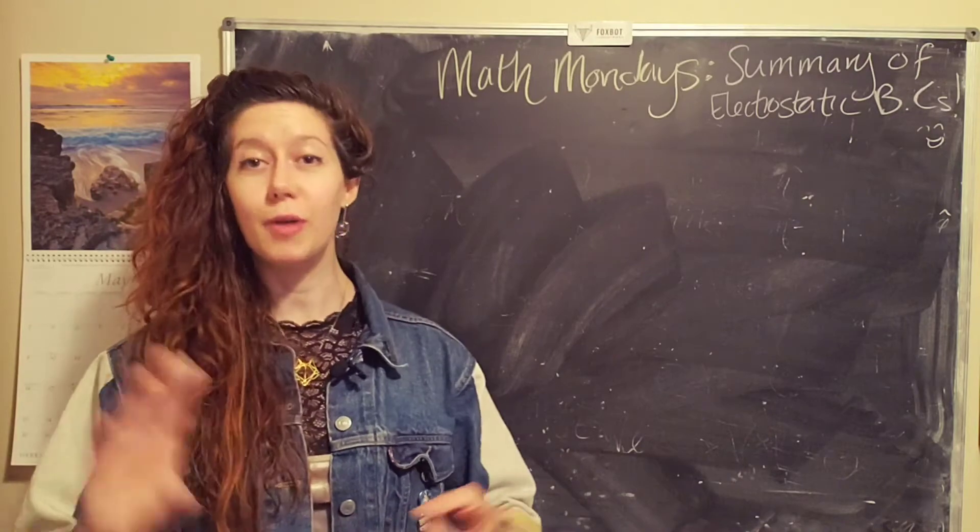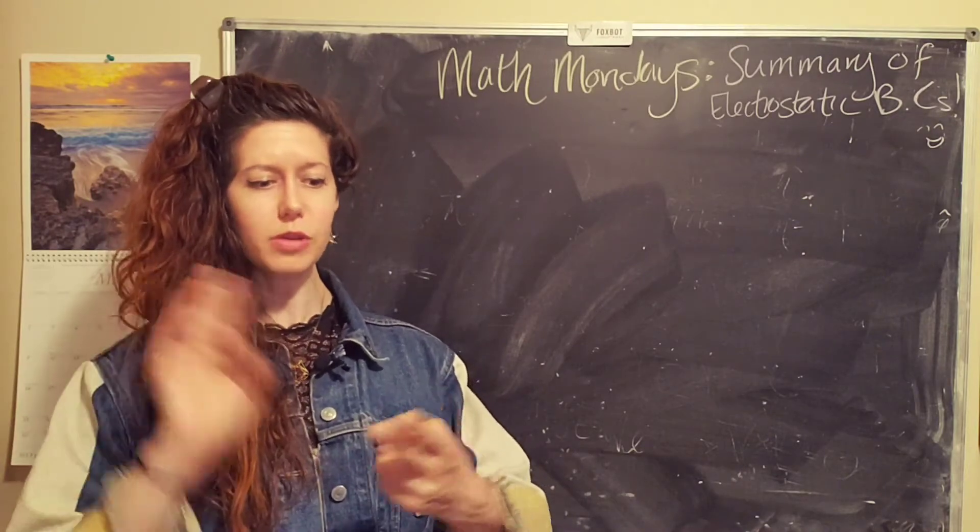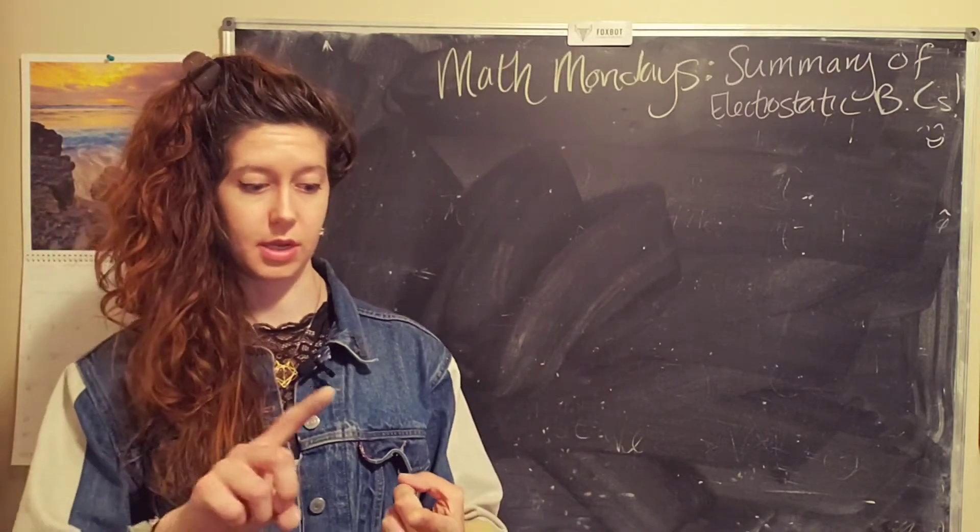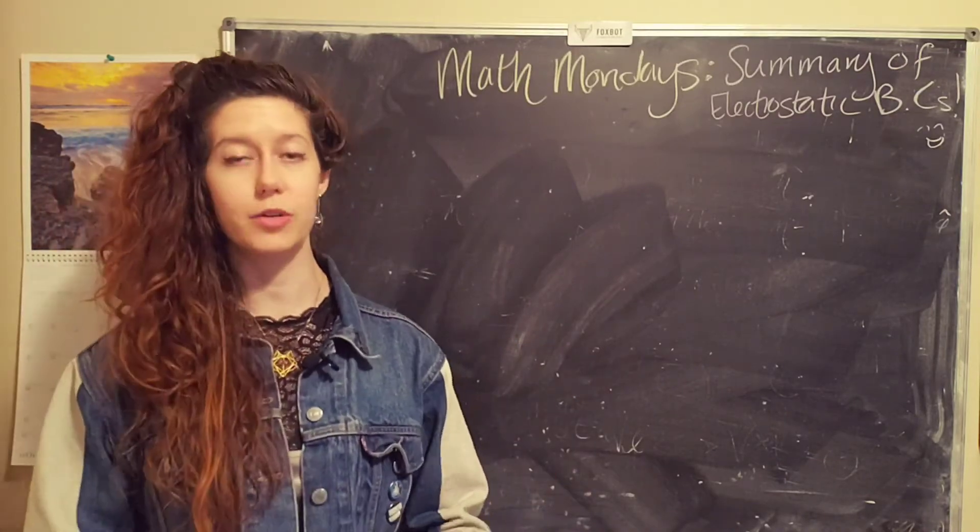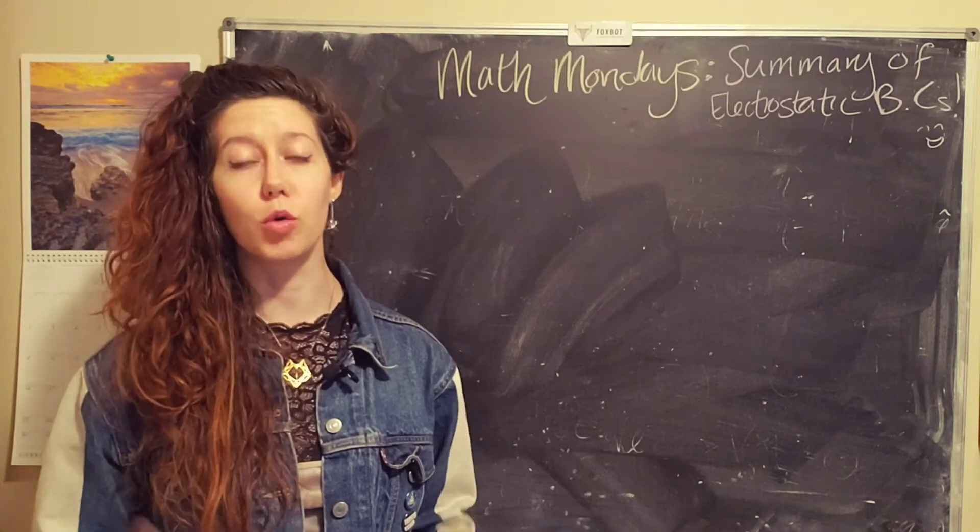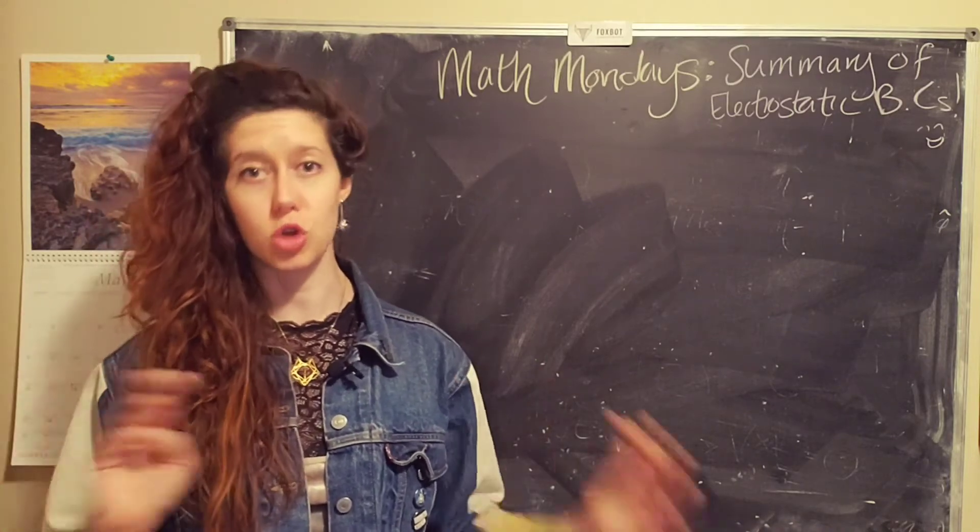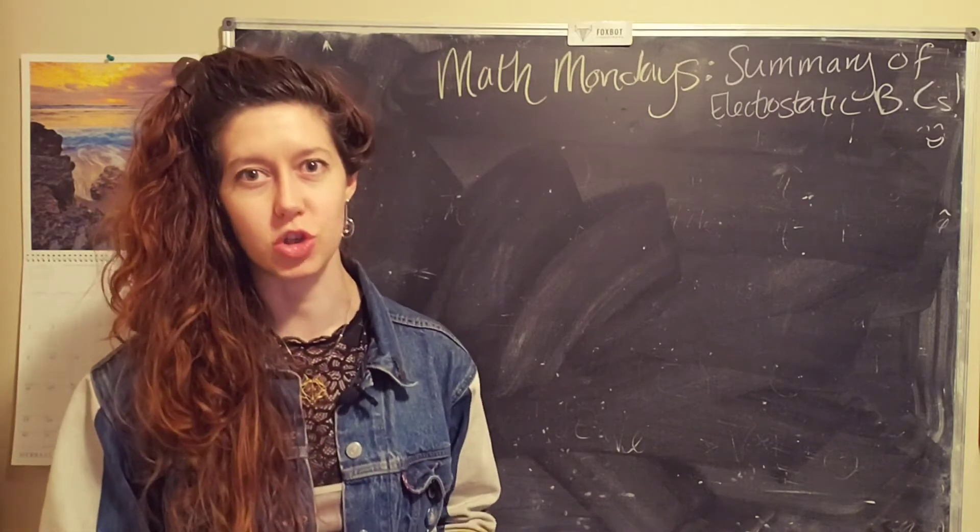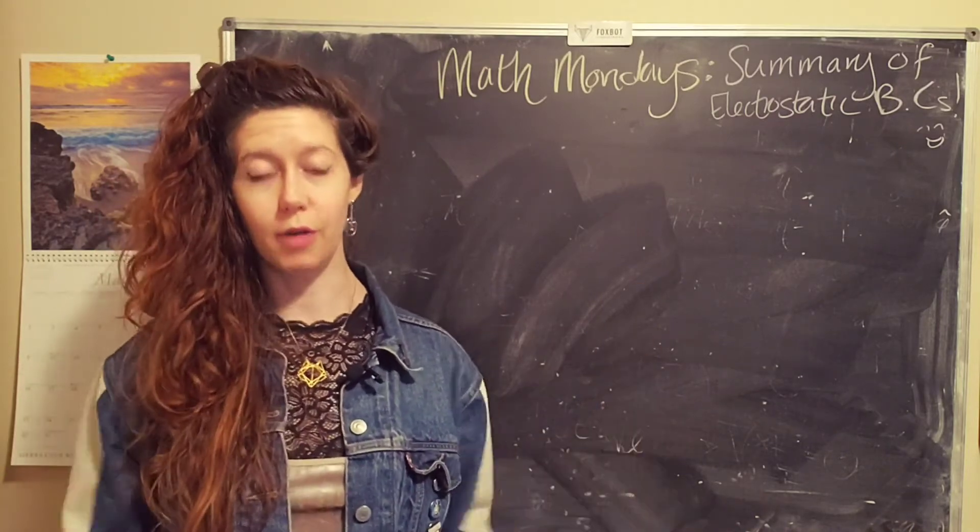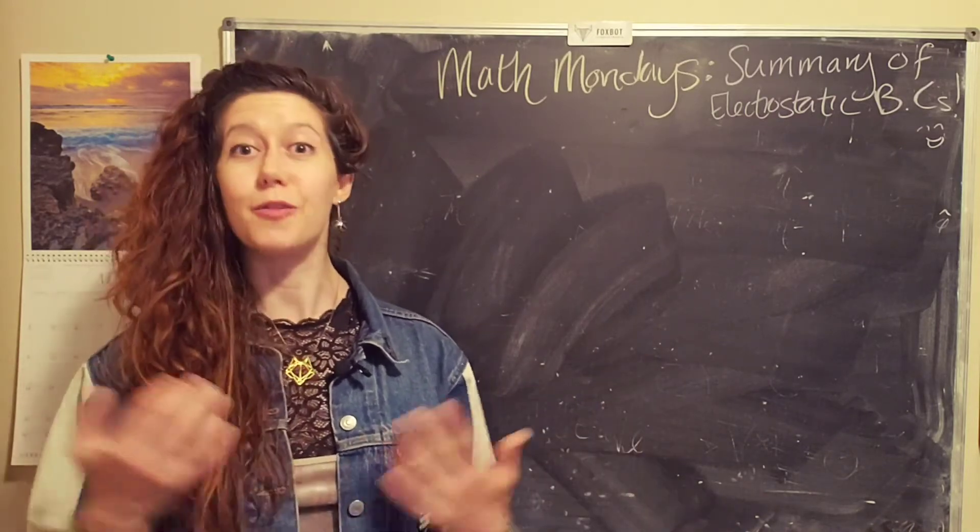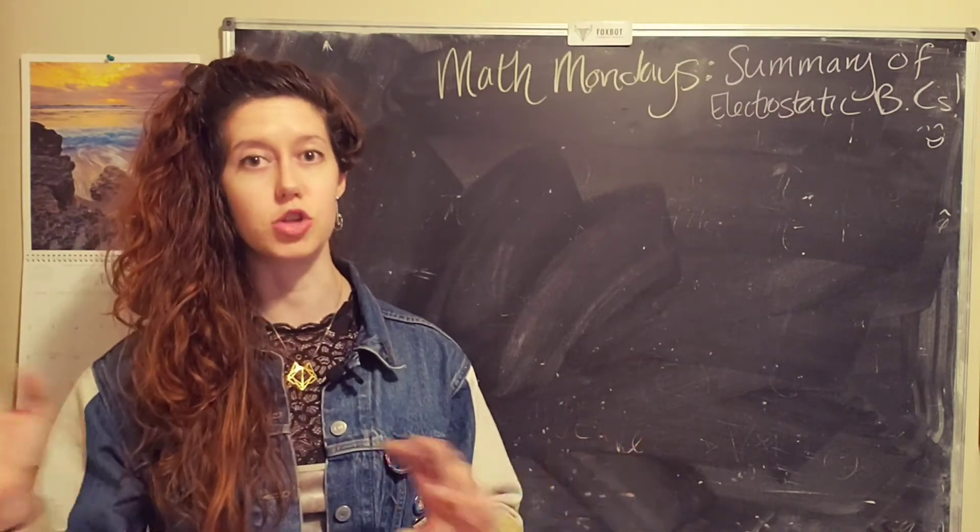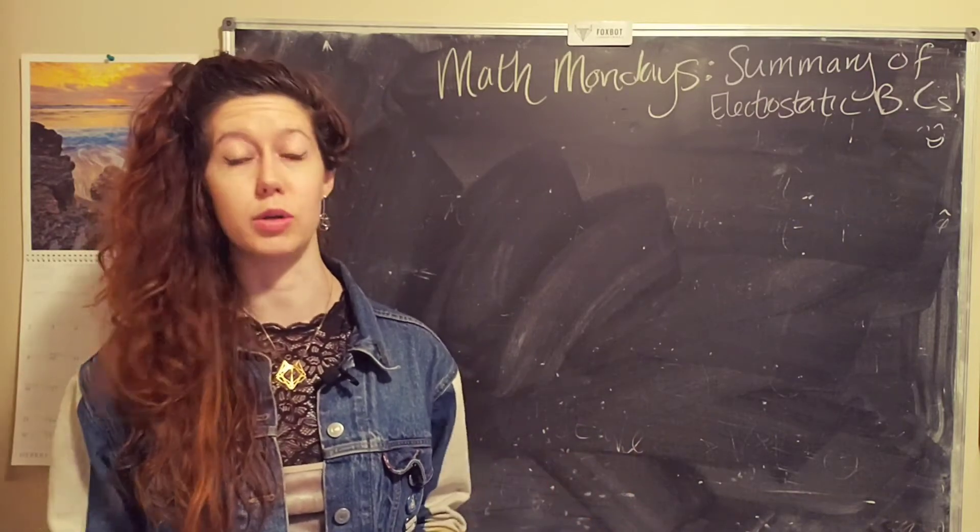So hopefully you remember that we started with two experimentally derived observations. Number one, Coulomb's law, which is the equation for the force between two charges and the principle of superposition, which applies to all electromagnetic forces. And from there we got a bunch of different equations which we'll summarize and talk about how they're related and why they're useful.